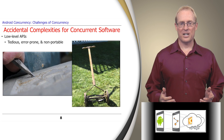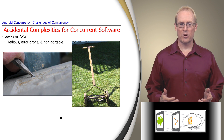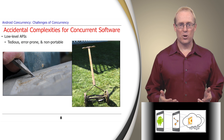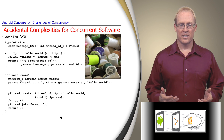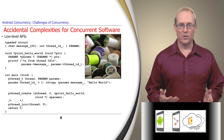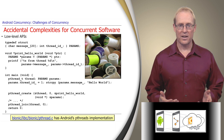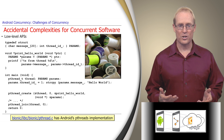A common accidental complexity is the use of low-level application programming interfaces, or APIs, which are tedious, error-prone, and non-portable when used to develop concurrent software. For example, consider the pthreads concurrency API that's available in Unix, including the versions of Linux used in Android, as shown at this path name. A number of accidental complexities are associated with using the pthread API to write concurrent software.